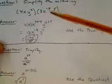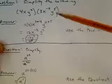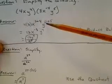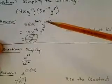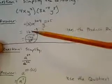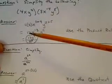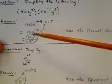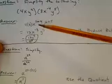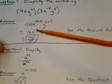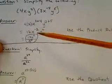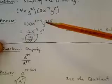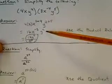y squared times y to the 5th power — same base of y — we have to add the exponents: 2 plus 5. Simplifying that down, we have 4 times 3 is 12. 1 minus 4 is negative 3, so we have x raised to the negative 3 power, and y to the 2 plus 5 is 7.